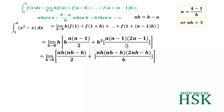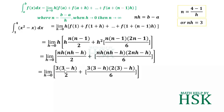I rewrite the terms systematically: h·n(n-1)/2 becomes nh·(nh-h)/2, and h²·n(n-1)(2n-1)/6 becomes nh·(nh-h)·(2nh-h)/6. Since nh = 3, I replace nh with 3 everywhere, giving: limit as h tends to 0 of 3·(3-h)/2 plus 3·(3-h)·(2·3-h)/6.